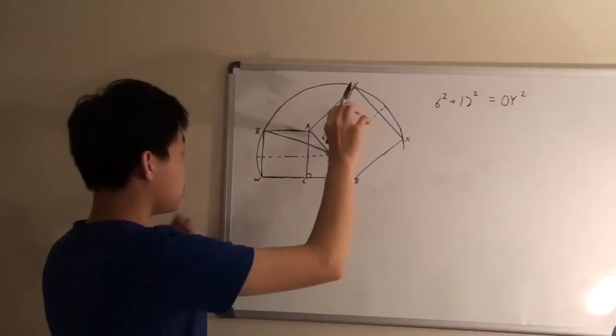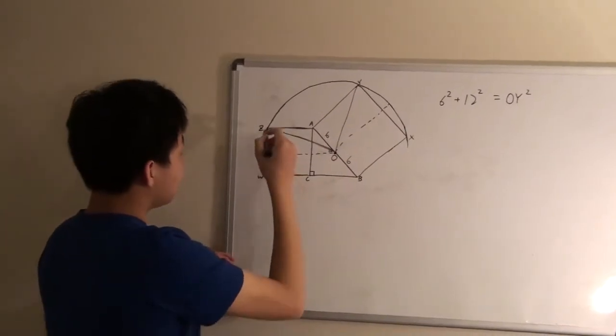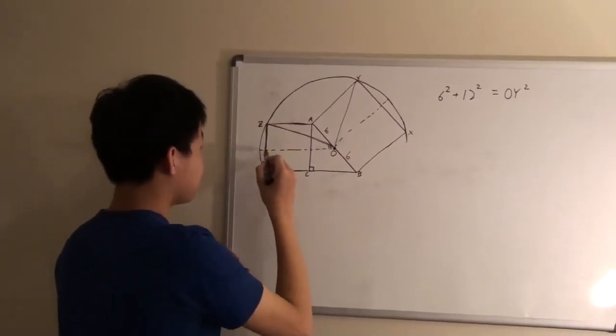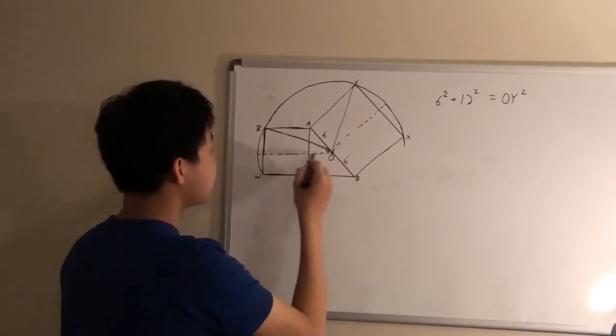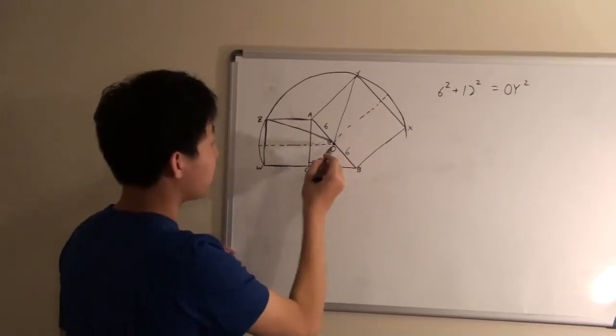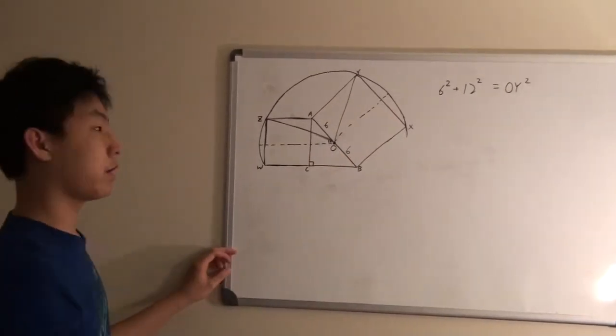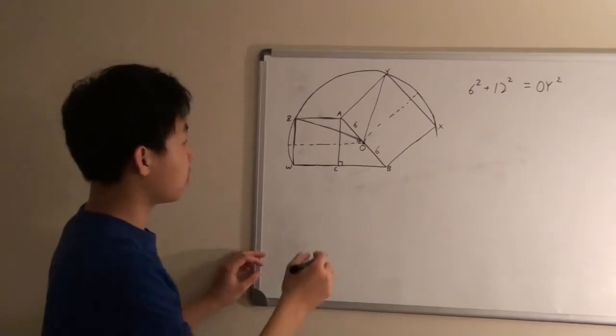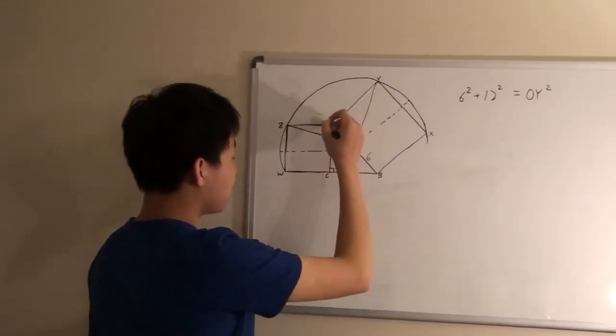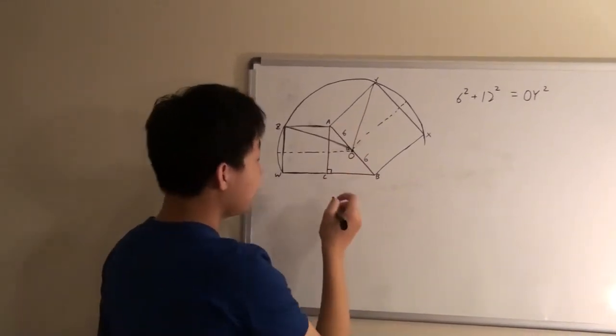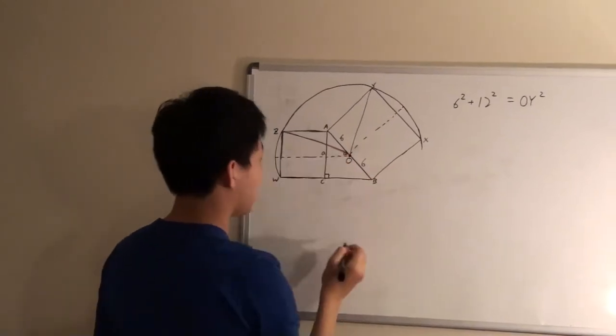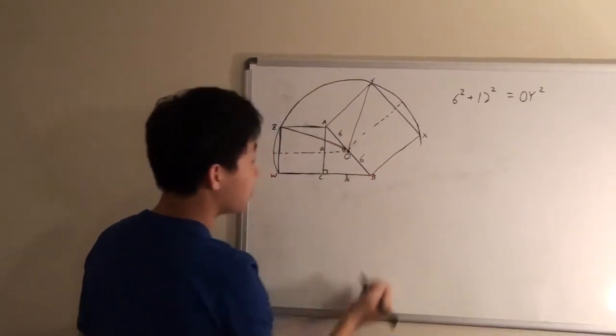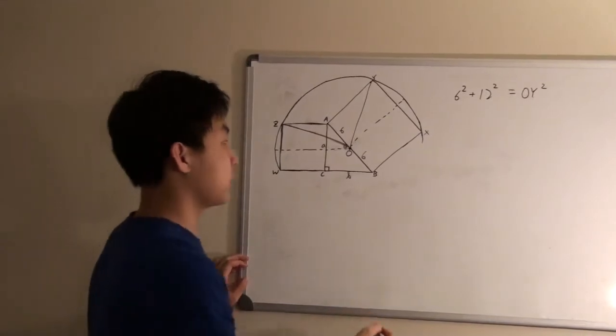And since OY is our radius, we also know that this length squared plus this length squared would also equal to the same value. So if we name length AC as A, and BC as B, we can come up with another equation.